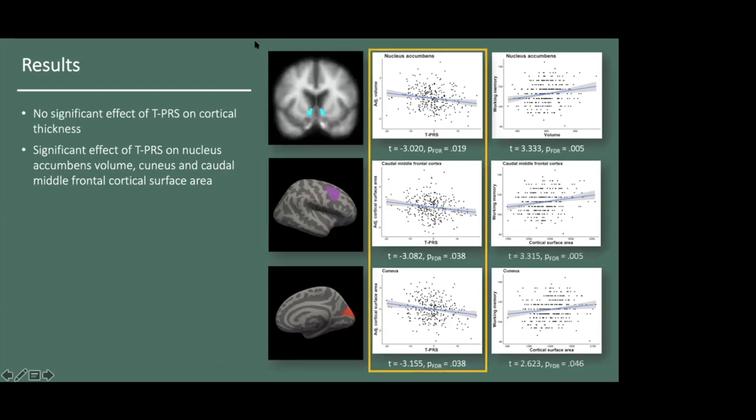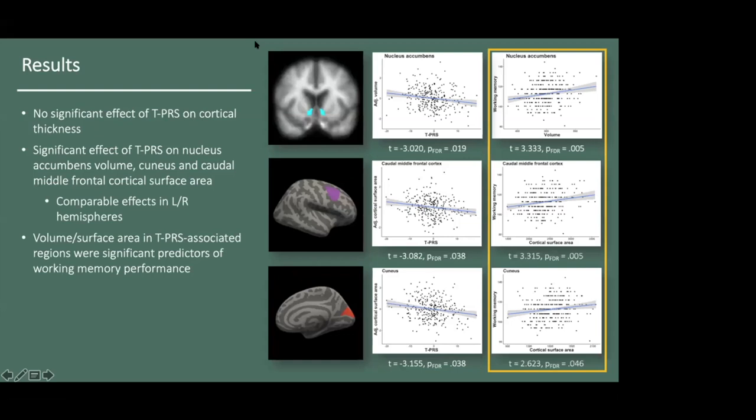As you can see here, in each case, higher TPRS, which indicates more depression-like gene expression, was associated with lower volume or surface area, and post-hoc analyses confirmed effects in both left and right hemispheres. We also observed significant brain-behavior associations whereby lower volume or surface area was associated with poorer performance on a working memory task.